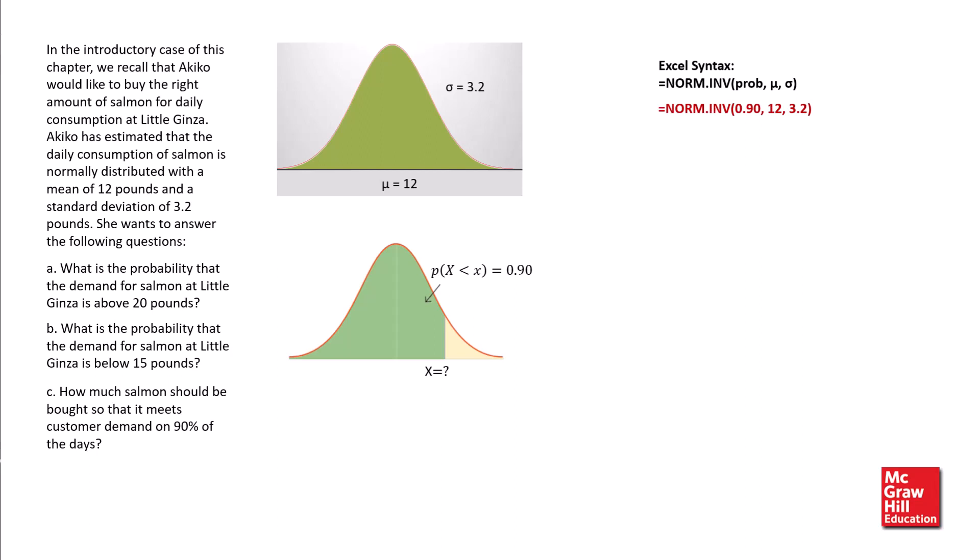we obtain the value of x as 16.1. We say that 16.1 pounds of salmon should be bought so that it meets customer demand on 90% of the days.